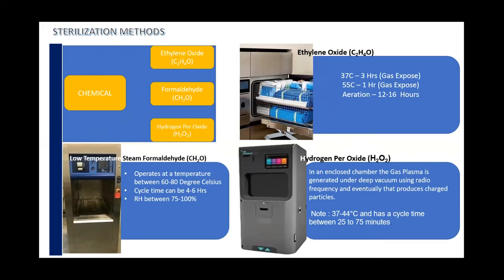Ethylene oxide generally has two different temperature windows: 37°C and 55°C. Hydrogen peroxide generally runs at a temperature between 37 to 45°C. But the turnaround time is much quicker in hydrogen peroxide — between 25 to 75 minutes, we can actually complete a full cycle. We are also having steam formaldehyde as another option.